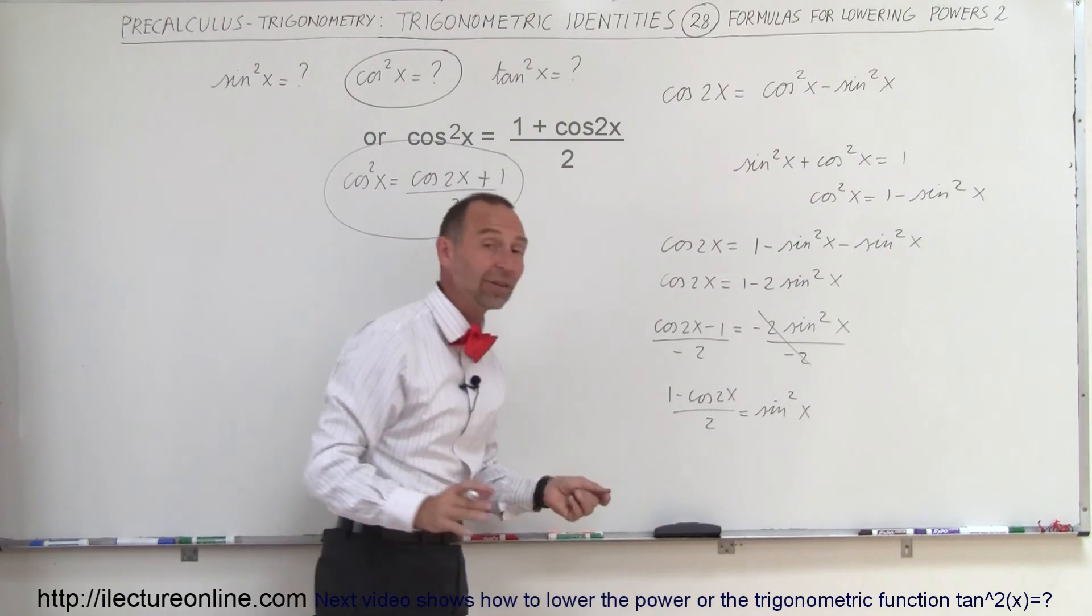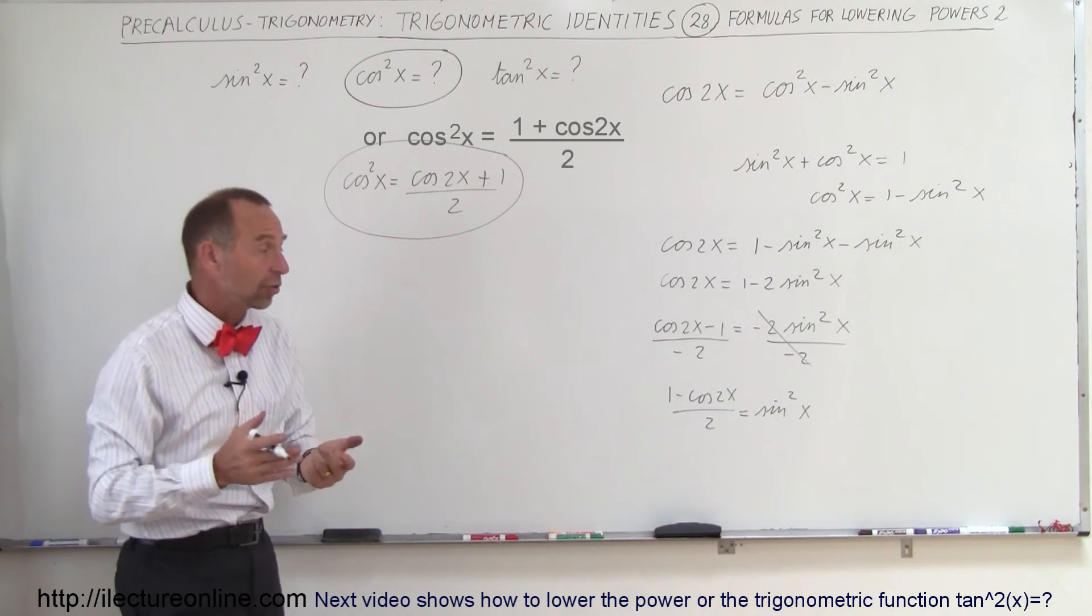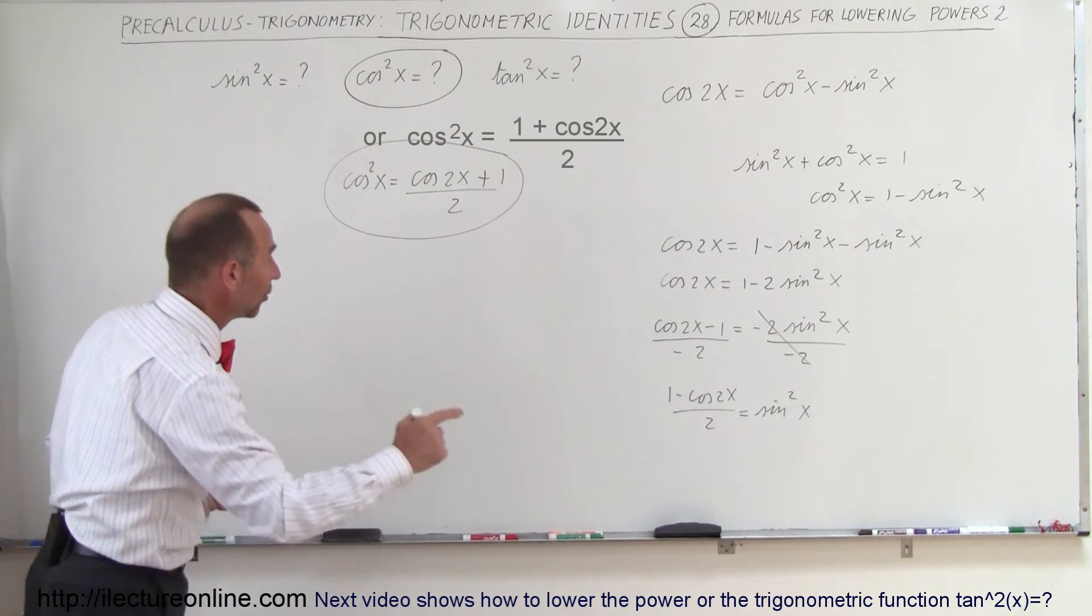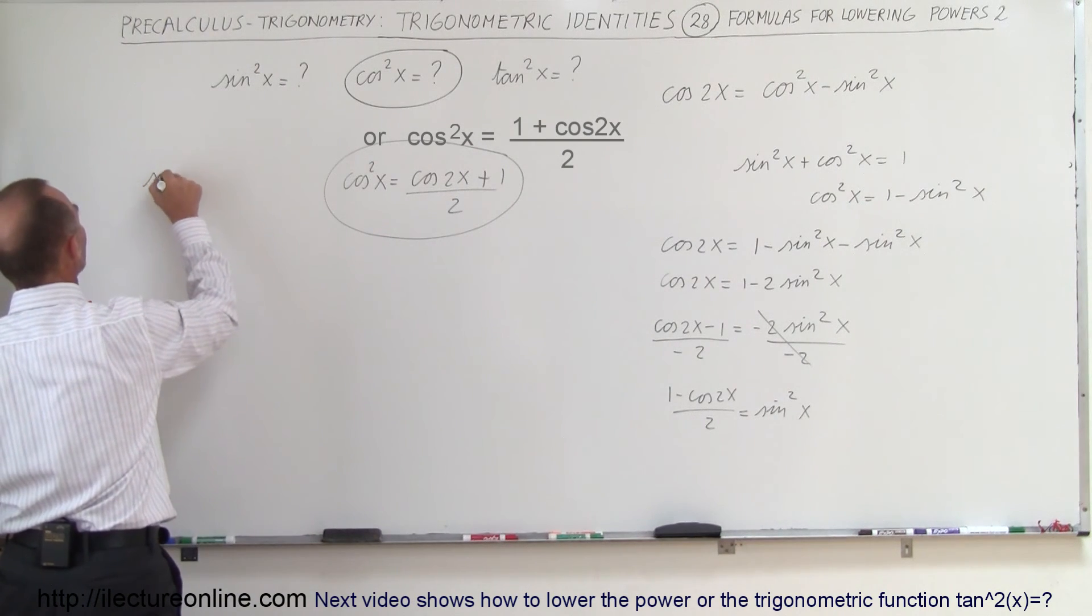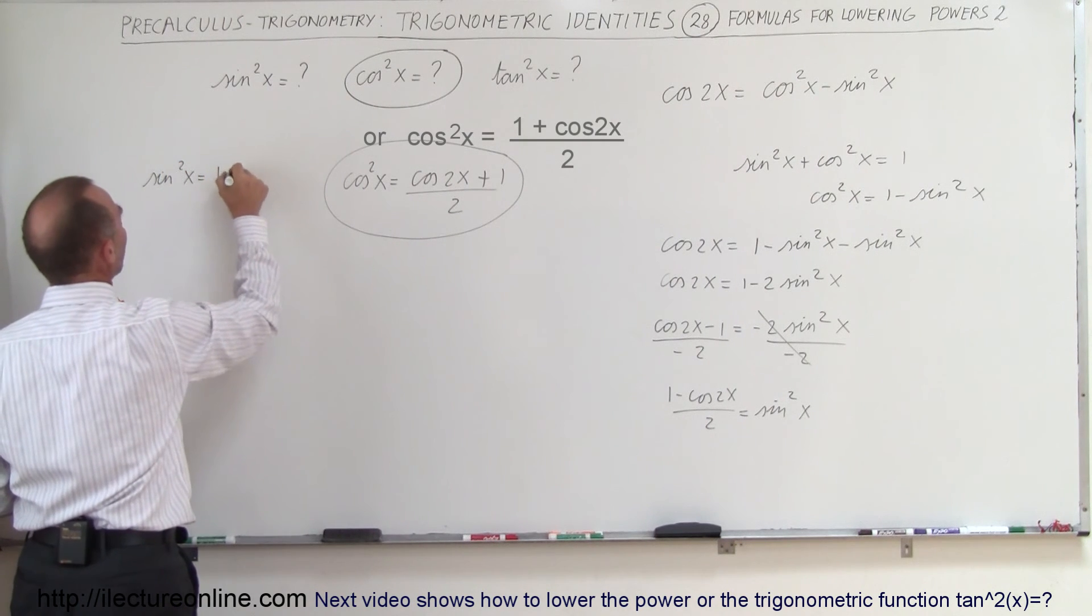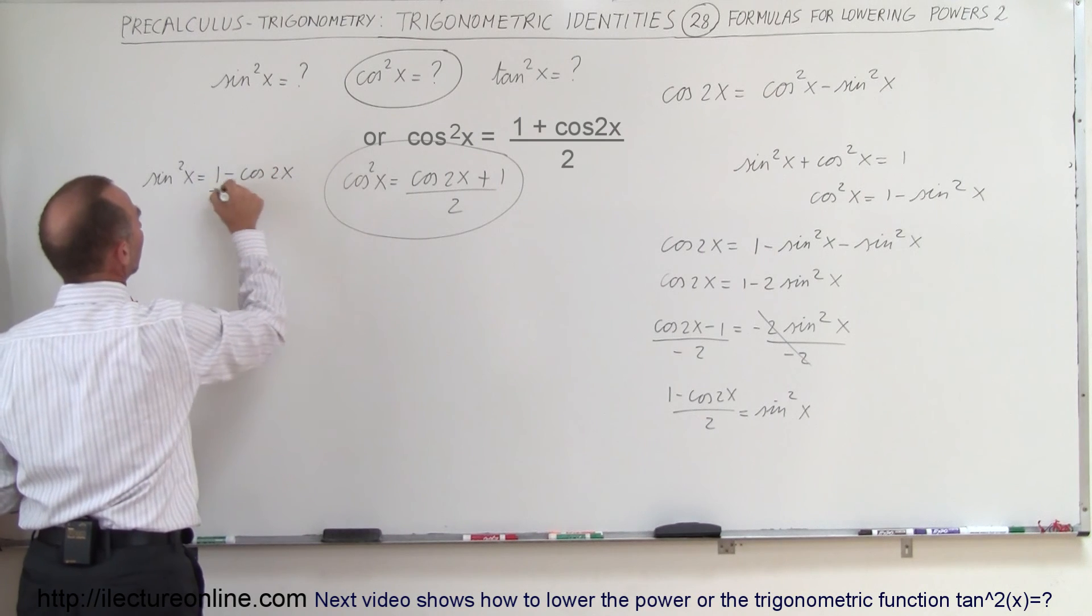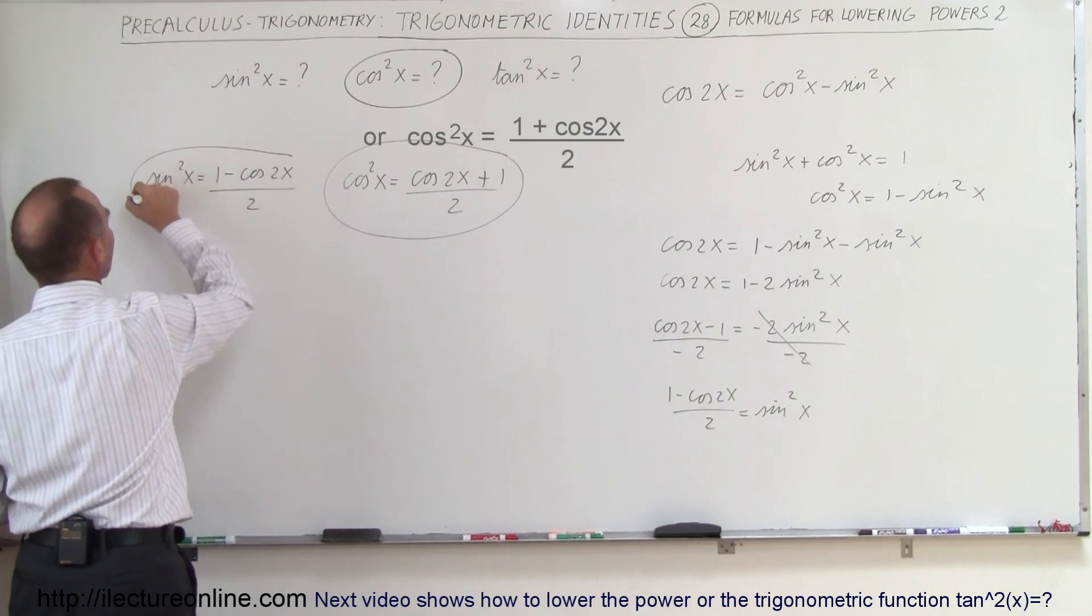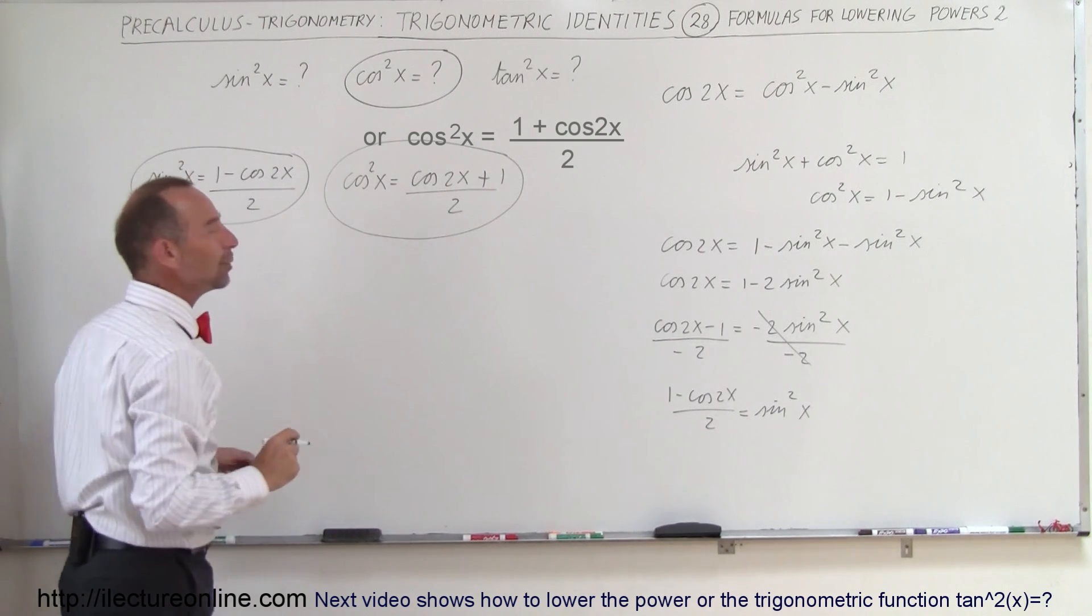And now we have an equivalency between the sine square of x and an expression in single powers. So we can then say that the sine square of x can be written as 1 minus the cosine of 2x divided by 2. And that's how we do it.